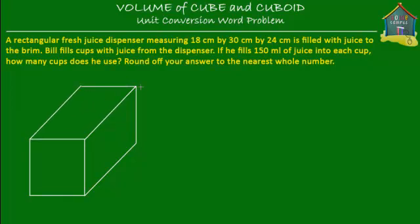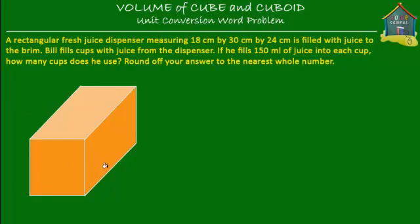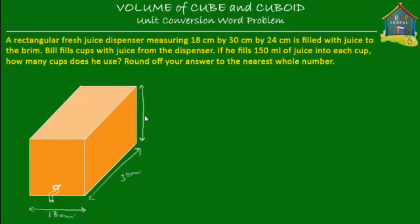Here is my rectangular, or cuboidal, fresh juice dispenser. Let me put some color into this — maybe it's got orange juice. And since it's a dispenser, it has to have a tap, so we draw the tap also. This is our dispenser and it has got a length of 18 centimeters, breadth of 30 centimeters, and height of 24 centimeters.